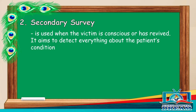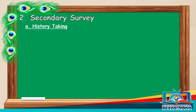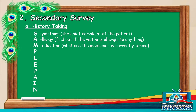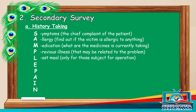Secondary survey is used when the victim is conscious or has revived. It aims to detect everything about the patient's condition. During secondary survey or history taking, SAMPLE is used in order to perform the steps more easily. S stands for symptoms or the chief complaint of the patient. A stands for allergy — find out if the victim is allergic to anything. M stands for medication — what medicines is the victim currently taking? P for previous illness that may be related to the problem. L or last meal, only for those subject for operation.